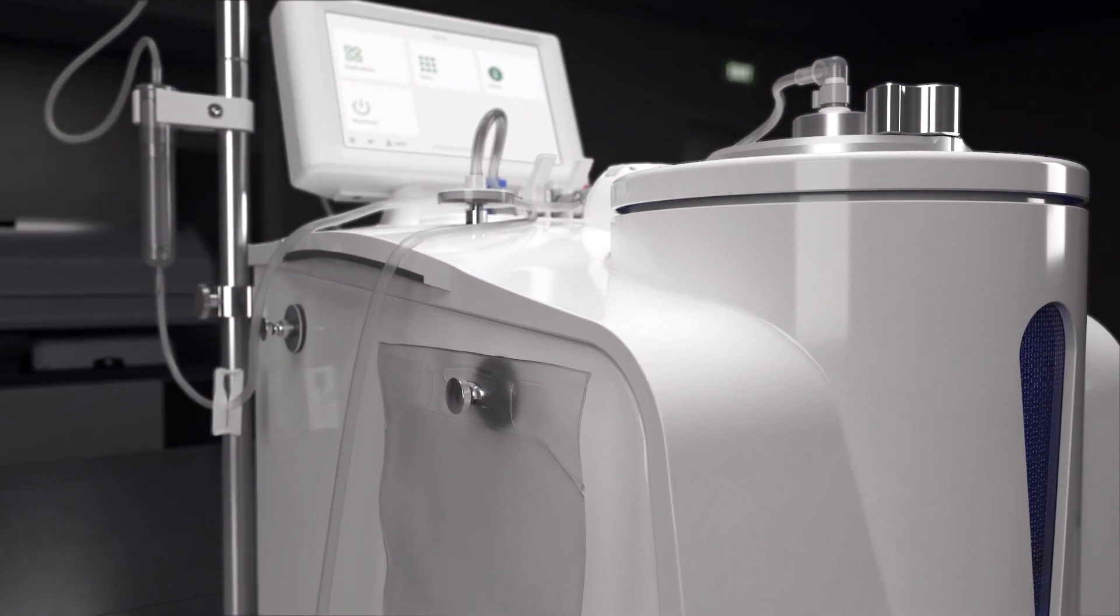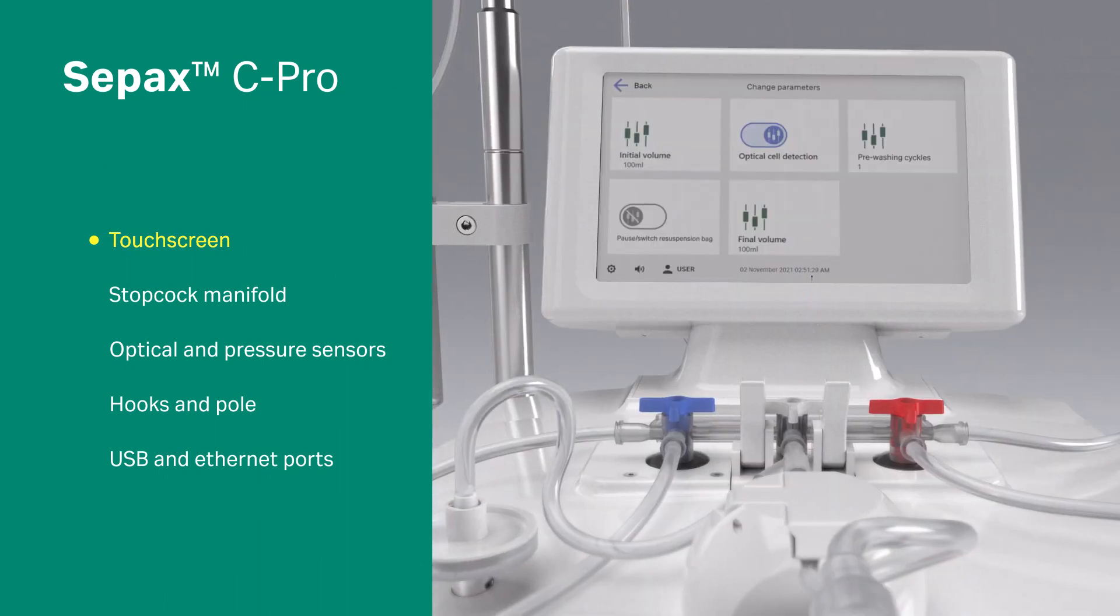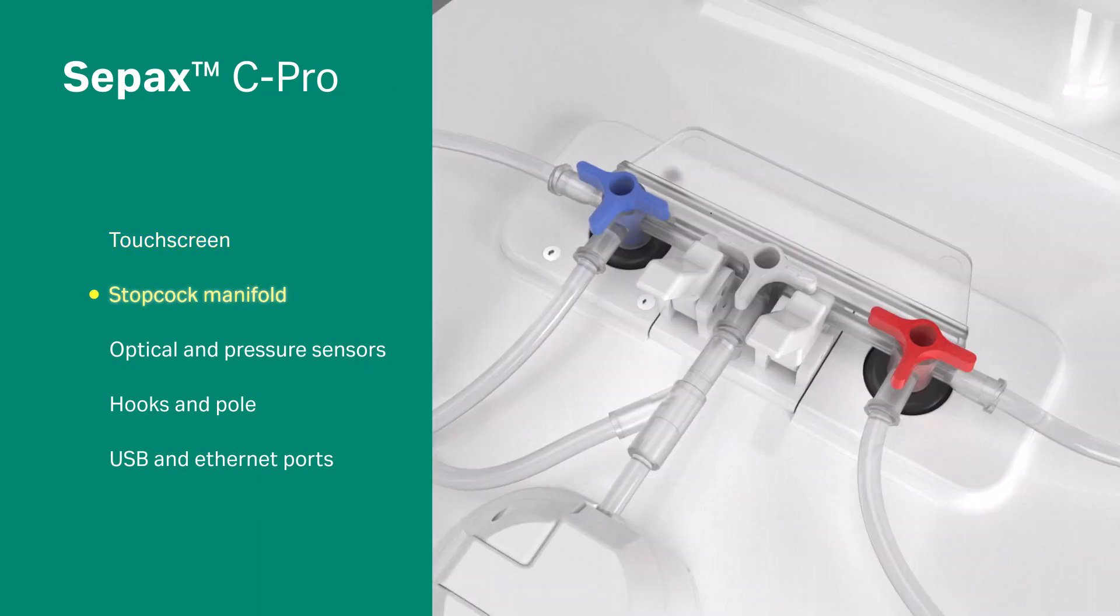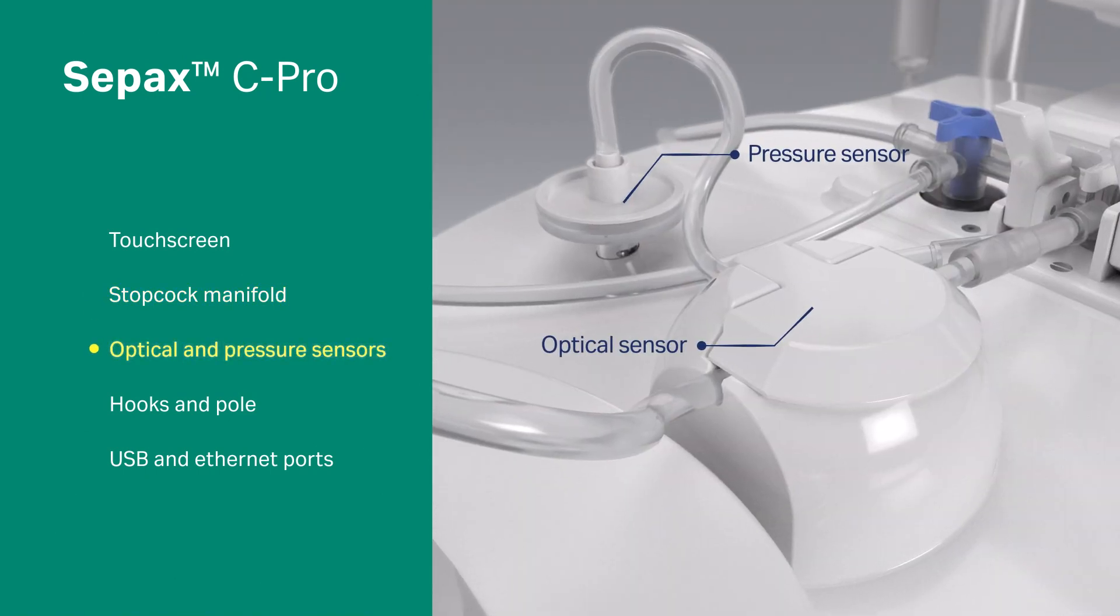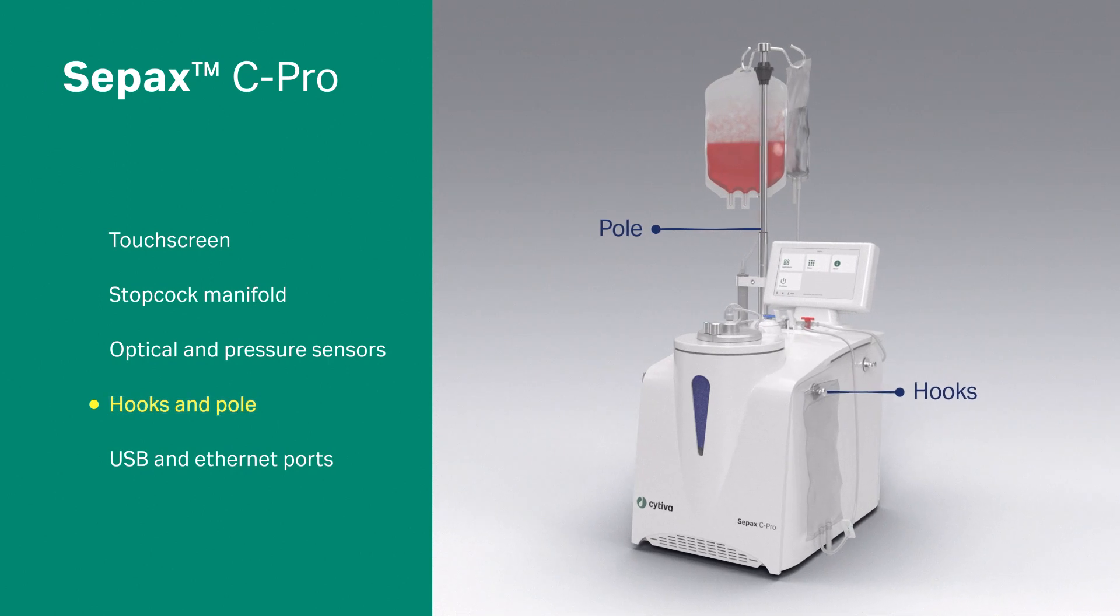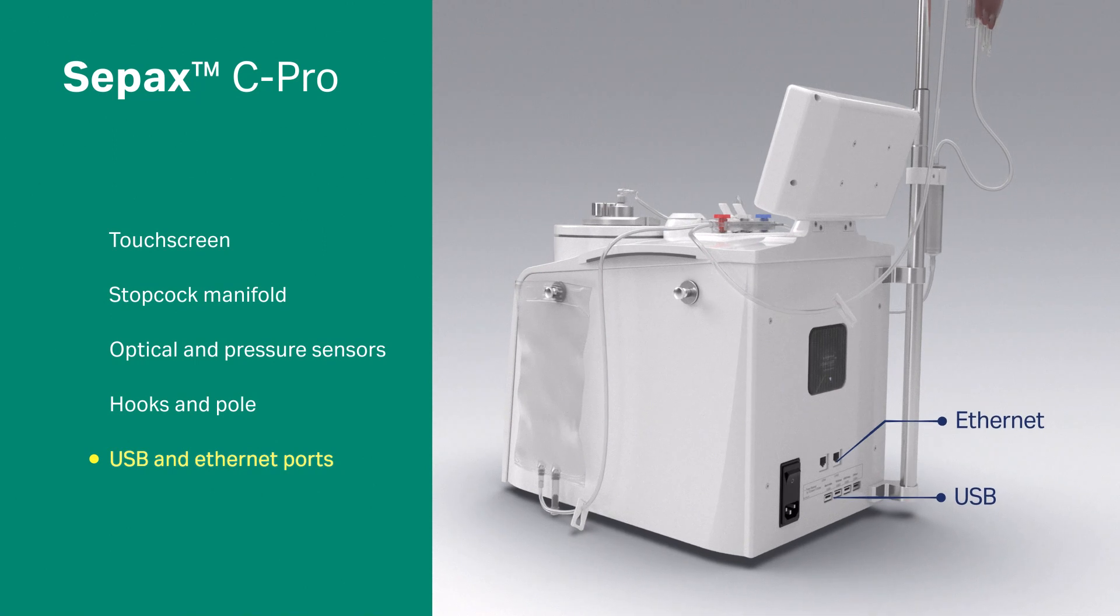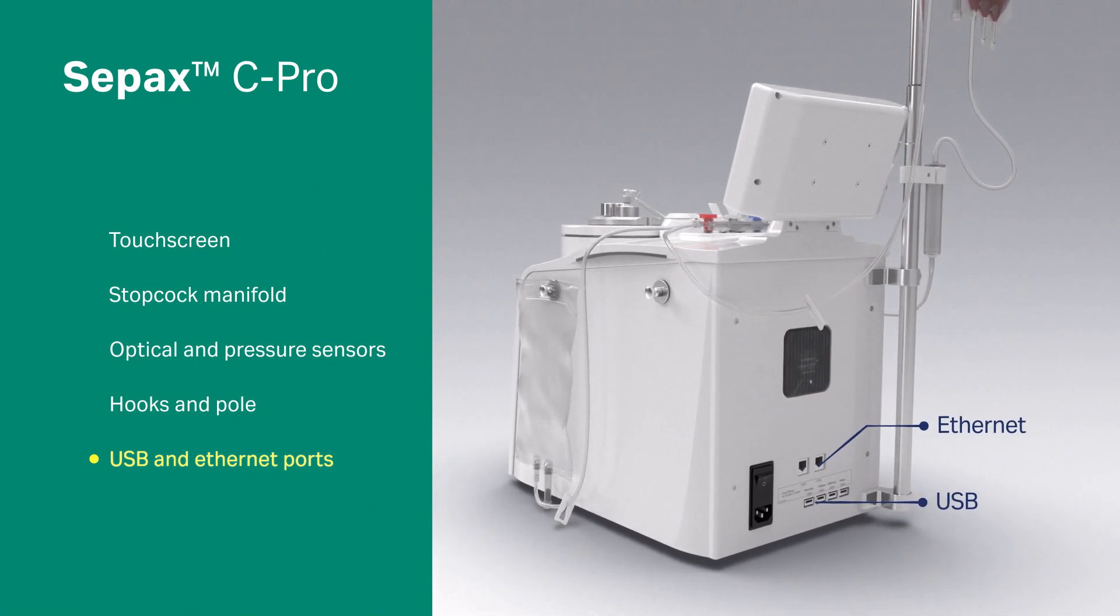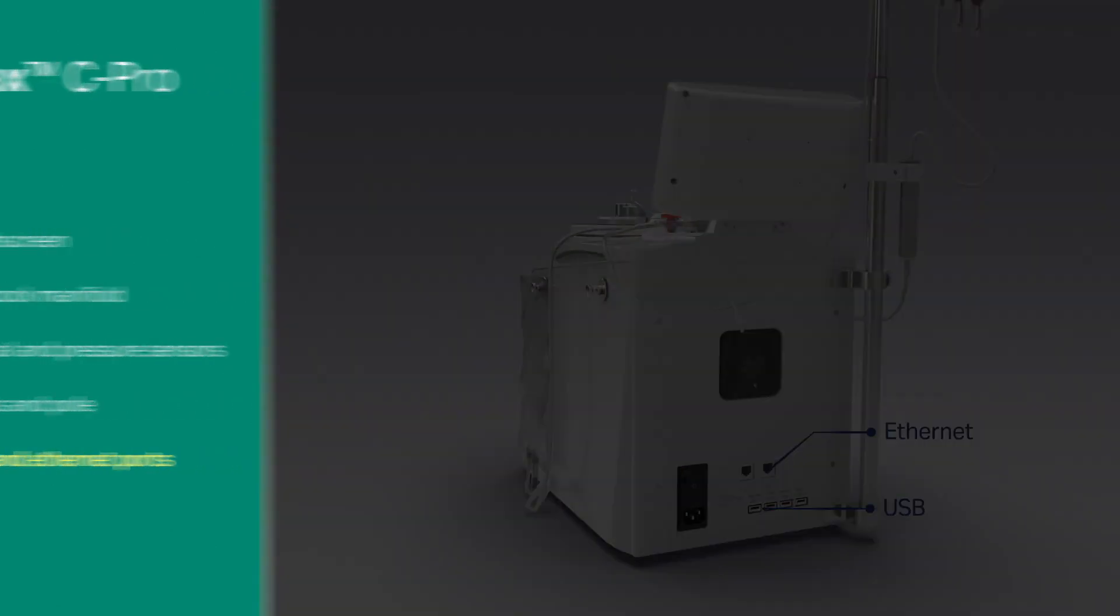The main features of CPAC's CPRO system include touchscreen-based user interface, stopcock manifold for controlling the flow path, optical and pressure sensors for process monitoring, hooks and pole for hanging process bags, USB and Ethernet ports that provide connectivity and traceability using a barcode reader or chronicle automation software.